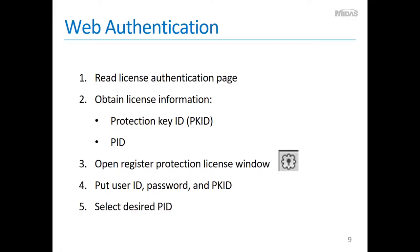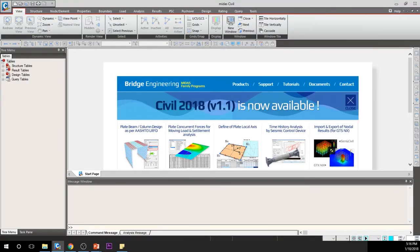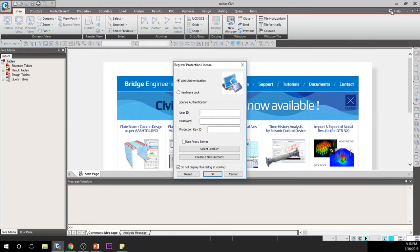In order to get access, you need two pieces of license information: the Protection Key ID, also known as PKID, and the PID. For engineers from big corporations, you can get this information from the IT department. For engineers from local firms, you will see them on the official invoice after you purchase a license. Step 3: please open the Register Protection License window. When you open MIDAS Civil, this will be the first page you see. From the top right corner, you will see a keyhole-shaped icon. Once you click it, you will see the Register Protection License window.